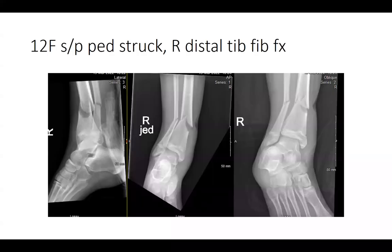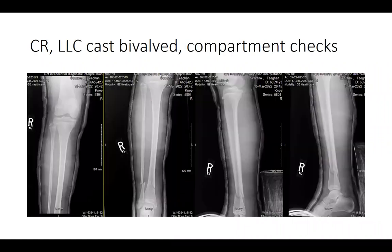First patient is a 12-year-old female, status post pedestrian struck, with a right distal tib-fib fracture. She was closed reduced, placed in a long leg cast bivalved, got compartment checks, doing well, and went home.